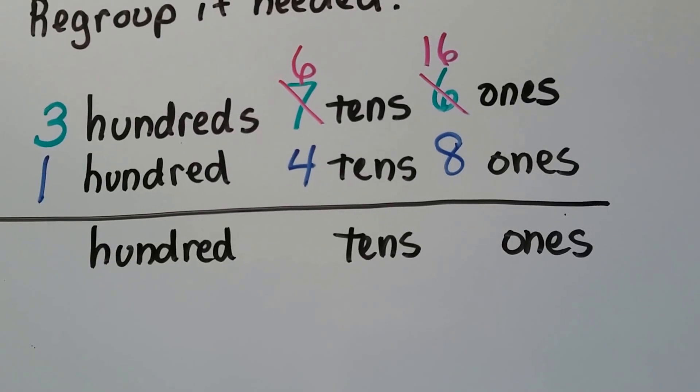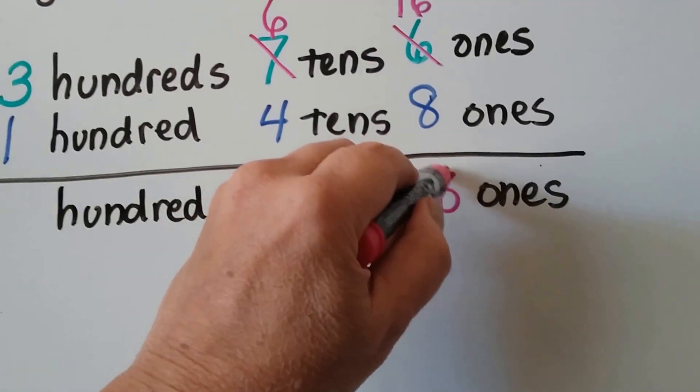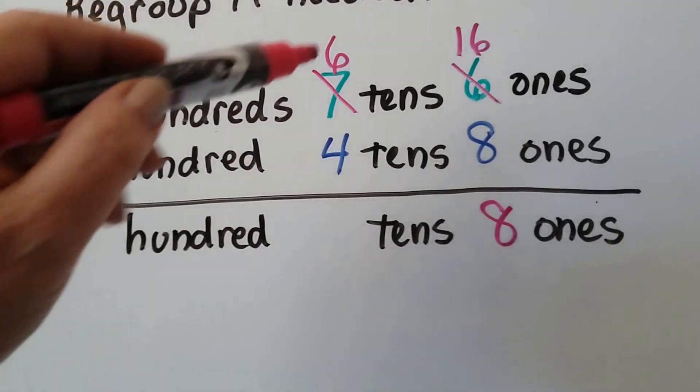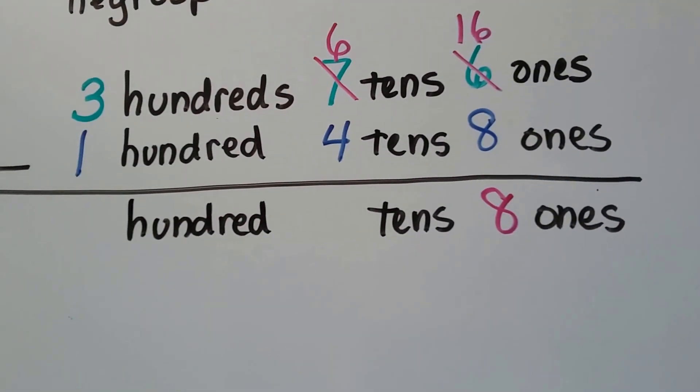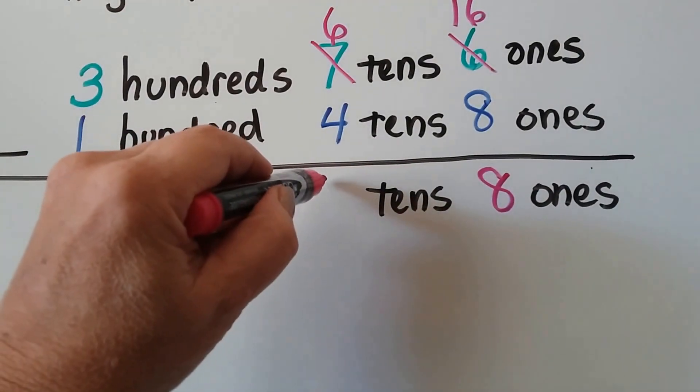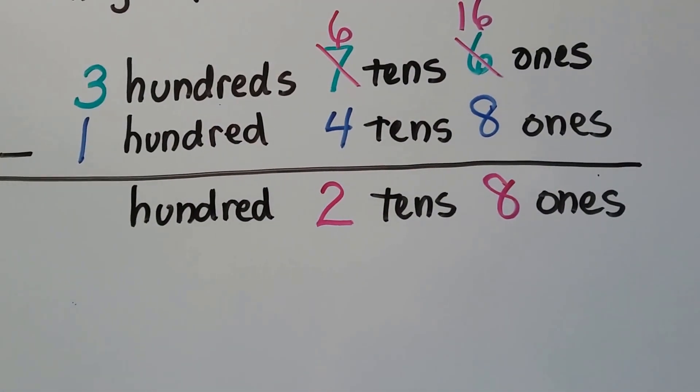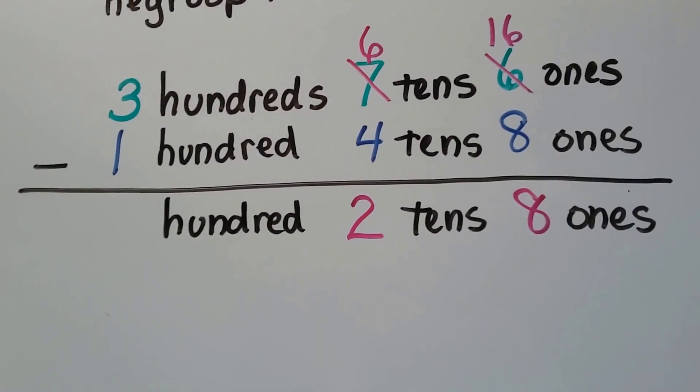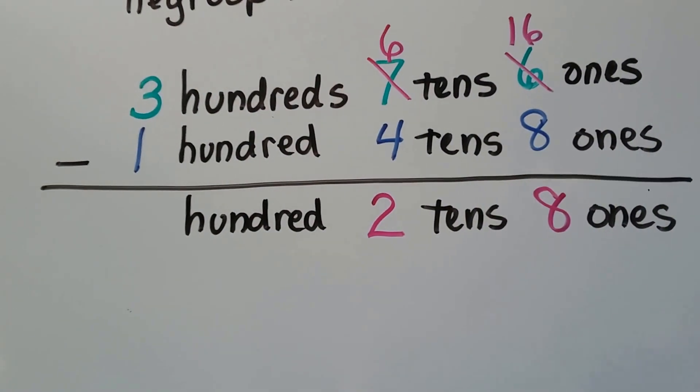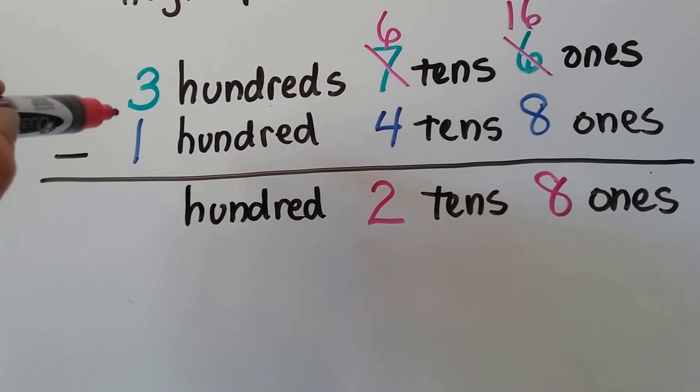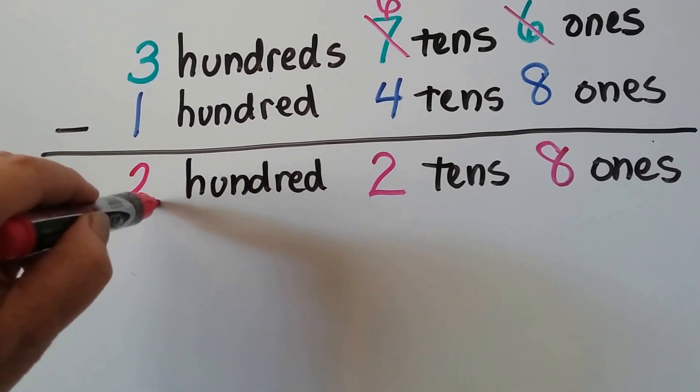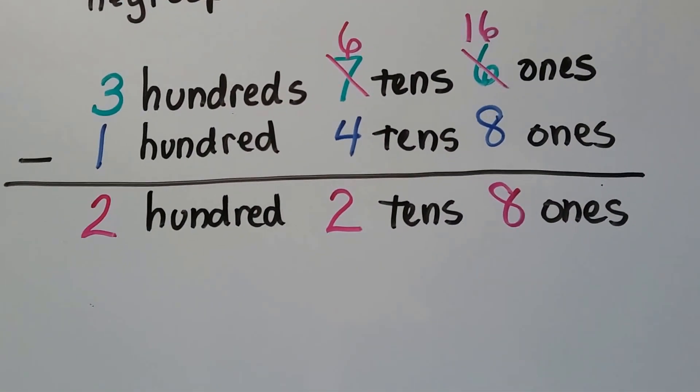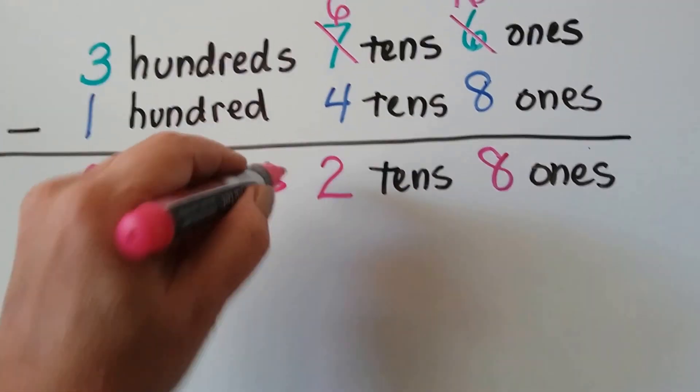And 16 take away 8 is, do you know? If you said 8, you're right. Because 8 plus 8 is 16. If we have 6 tens and we take away 4 tens, we have, do you know? 2 tens. 4 plus 2 is 6. See? We can check it with subtraction and addition. See? Because they're all fact families. 3 hundreds take away 1 hundred is 2 hundreds. So our answer is 2 hundreds, 2 tens, and 8 ones. It should say 2 hundreds, shouldn't it?